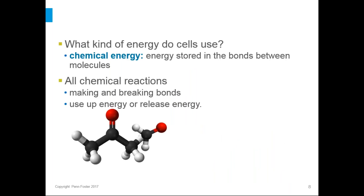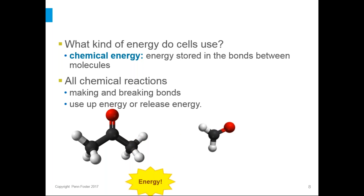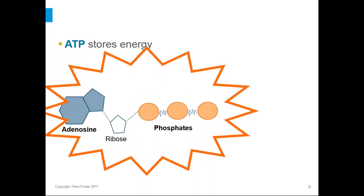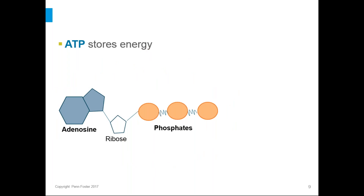We're talking about energy, but there are lots of different forms. What kind of energy do cells actually use? Cells use what's called chemical energy — energy stored in the bonds between molecules. All chemical reactions require making and breaking bonds, and will either use up or release energy when this happens. There's one particular molecule that cells utilize a lot for their energy needs, and it's called ATP, short for adenosine triphosphate, because the molecule has an adenosine and three phosphates.